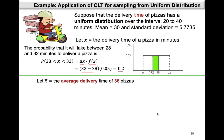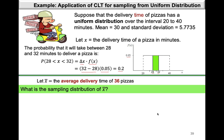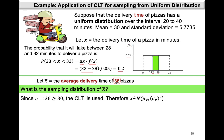Let x-bar be defined as the average delivery time of 36 pizzas, and now we're interested in finding the sampling distribution of x-bar. The first thing we need to check is whether the sample size — in this case 36 pizzas — is large enough. Since 36 is greater than 30, our sample is definitely large enough, so we can apply the central limit theorem. This means that x-bar has an approximate normal distribution with mean mu x-bar equal to the population mean of x, and variance sigma squared x-bar.